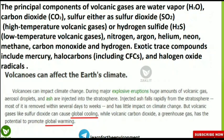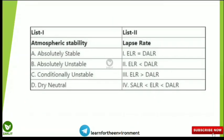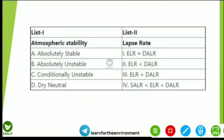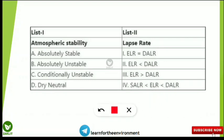The next frequently asked concept is atmospheric stability and lapse rate, presented as a match-the-following question (which can also appear as assertion-reasoning or single questions). The key abbreviations are: ELR = Environmental Lapse Rate, DALR = Dry Adiabatic Lapse Rate, and SALR = Saturated Adiabatic Lapse Rate. Try to match each atmospheric stability condition before the answer is revealed.